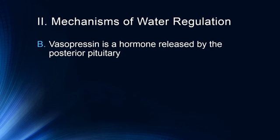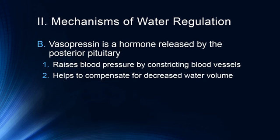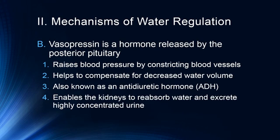One of the ways in which both blood pressure and fluid retention are maintained is through a hormone called vasopressin, released by the posterior pituitary. Vasopressin raises our blood pressure by constricting our blood vessels — a process called vasoconstriction. This helps compensate for decreased water volume by decreasing the overall volume of our blood vessels. This is also known as anti-diuretic hormone, or ADH. It enables the kidneys to reabsorb water and excrete highly concentrated urine. Several different drugs are known to be diuretics, including caffeine, which cause us to release more water and tend to make us more thirsty.